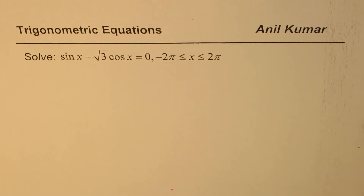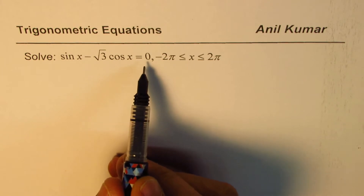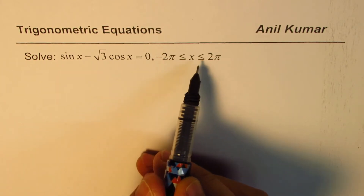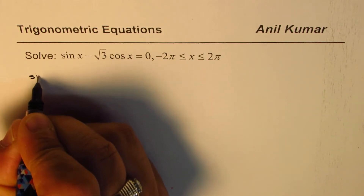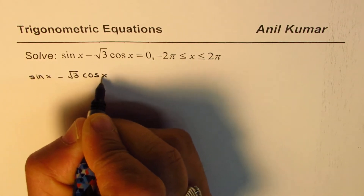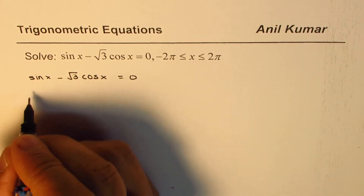I'm Al Kumar and we are solving trigonometric equations. In this video we will understand how to write all possible solutions in the given domain. The question is sine x minus square root 3 cos x equals 0, where x is between minus 2π and plus 2π. That's the domain.